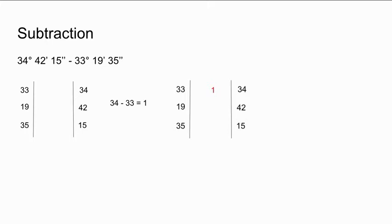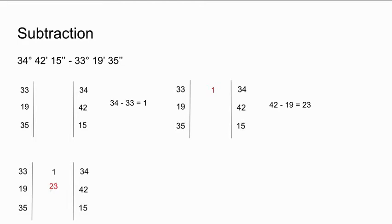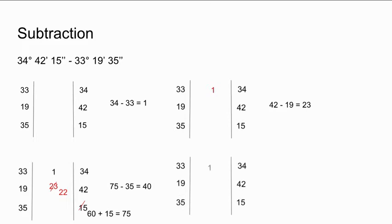We then move on to the minutes: 42 minus 19 equals 23, and write 23 between the two lines. Now we subtract the seconds. Because 15 is smaller than 35, we need to borrow from the unit above. Thus, we subtract 1 minute from 23 minutes and add 60 seconds to 15 seconds, keeping in mind that 1 minute equals 60 seconds. Our equation is now 75 minus 35 equals 40. Thus, 34 degrees, 42 minutes, and 15 seconds minus 33 degrees, 19 minutes, and 35 seconds is 1 degree, 22 minutes, and 40 seconds.